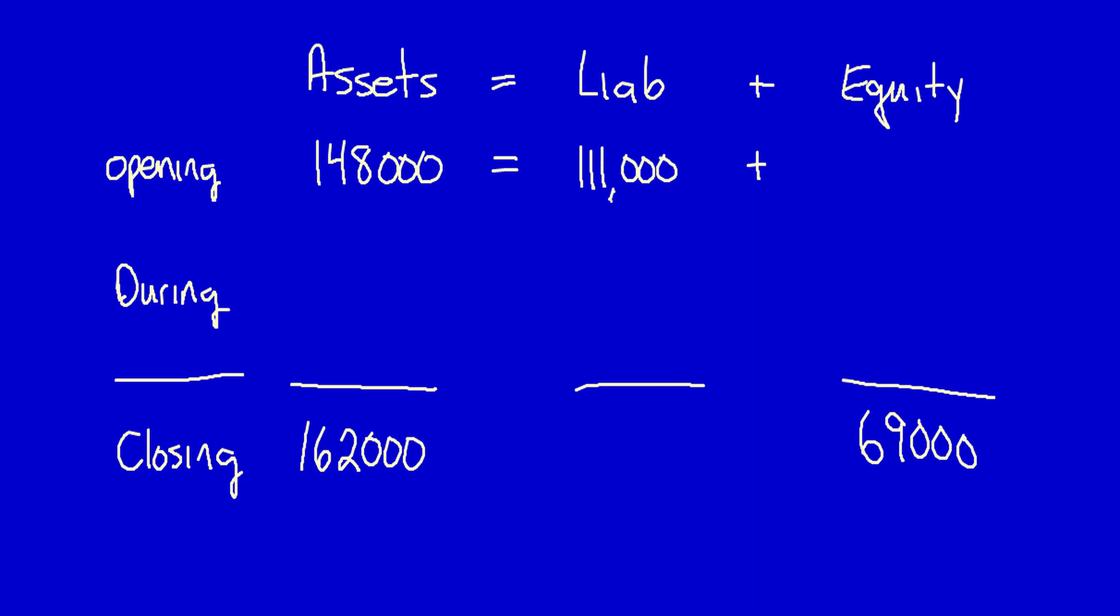we solve for the unknown numbers. Remember when we're solving these, that each of these is an individual equation. Opening works independently of everything else. During, we can do the same thing. And then ending.